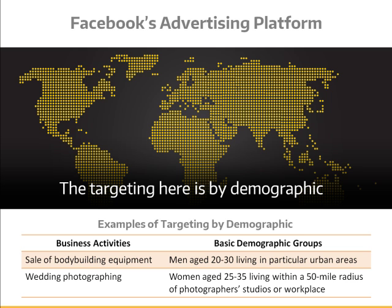So if you were selling bodybuilding equipment, you could make sure your ads were only seen by men aged 20 to 30 living in particular urban areas. Wedding photographers, for example, have known about this for a long time. Because Facebook knows so much about its members, people who supply wedding services are able to target engaged women aged 25 to 35 living within a 50-mile radius of their studios or workplace. That's exactly their target audience — the people who aren't just most likely to click, but also most likely to place an order.